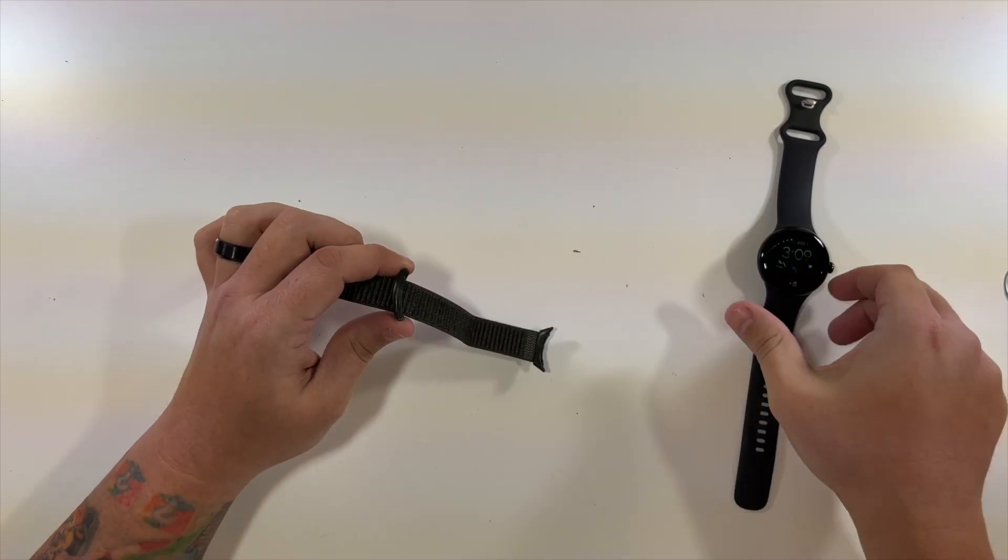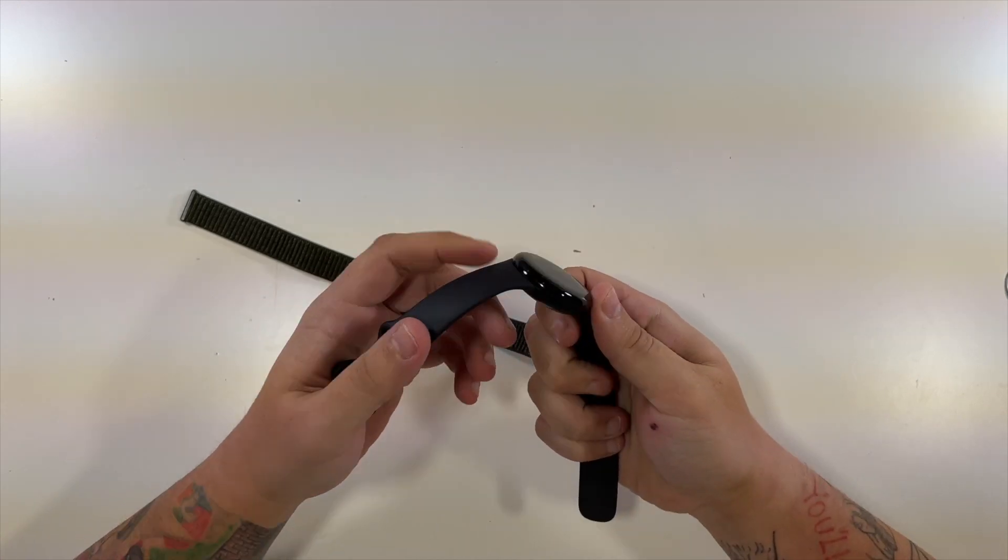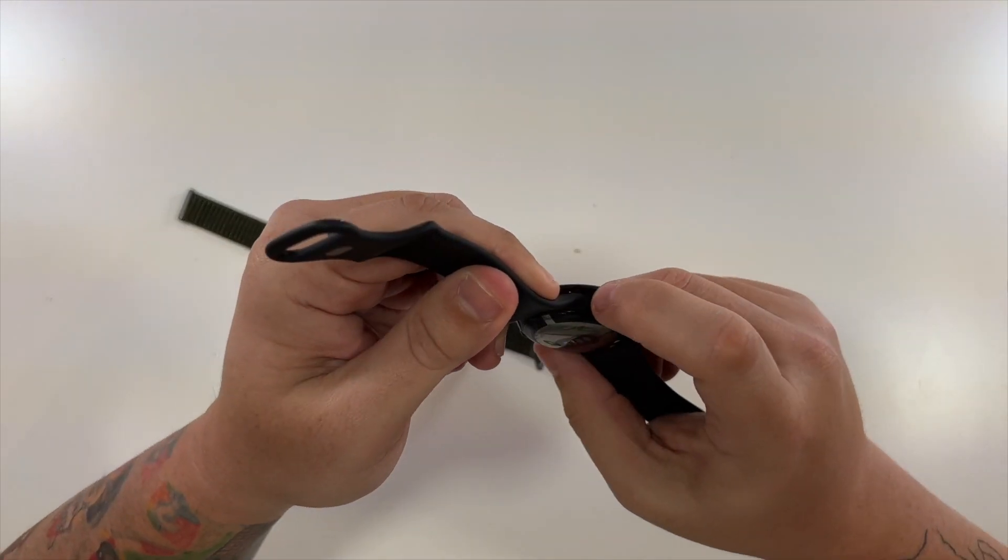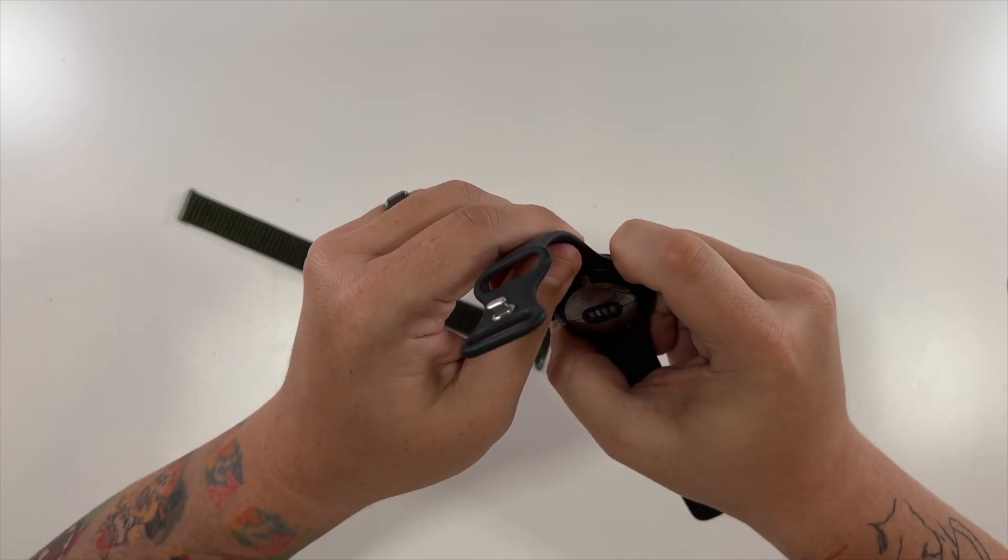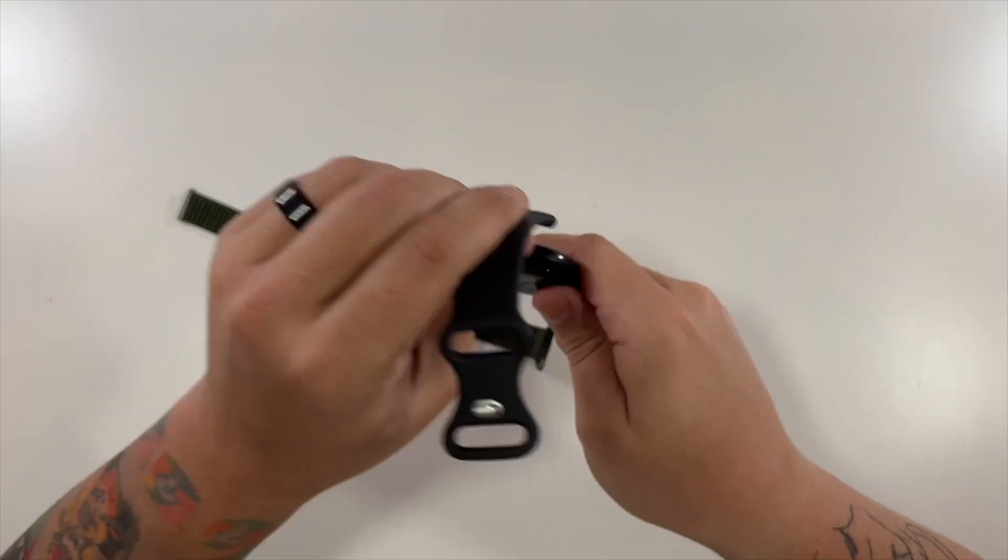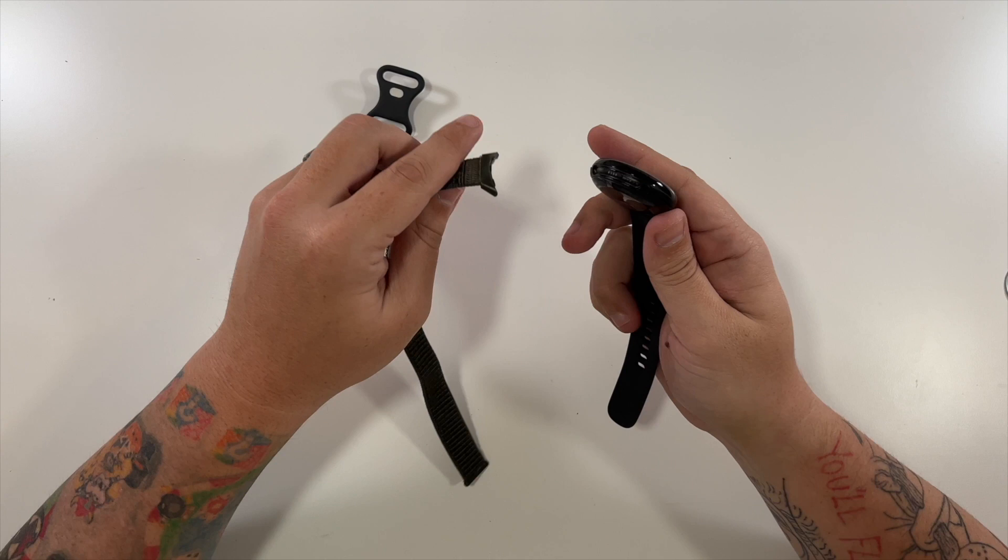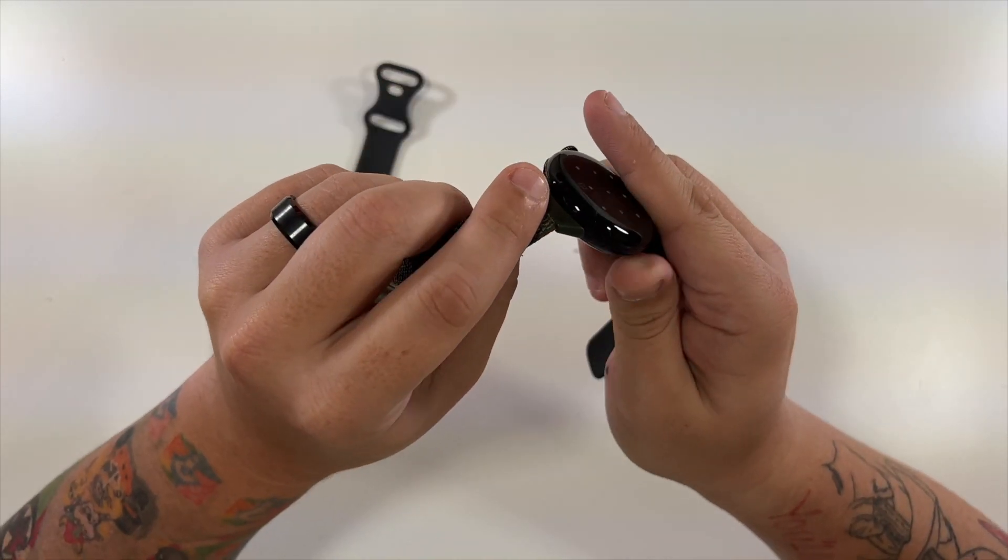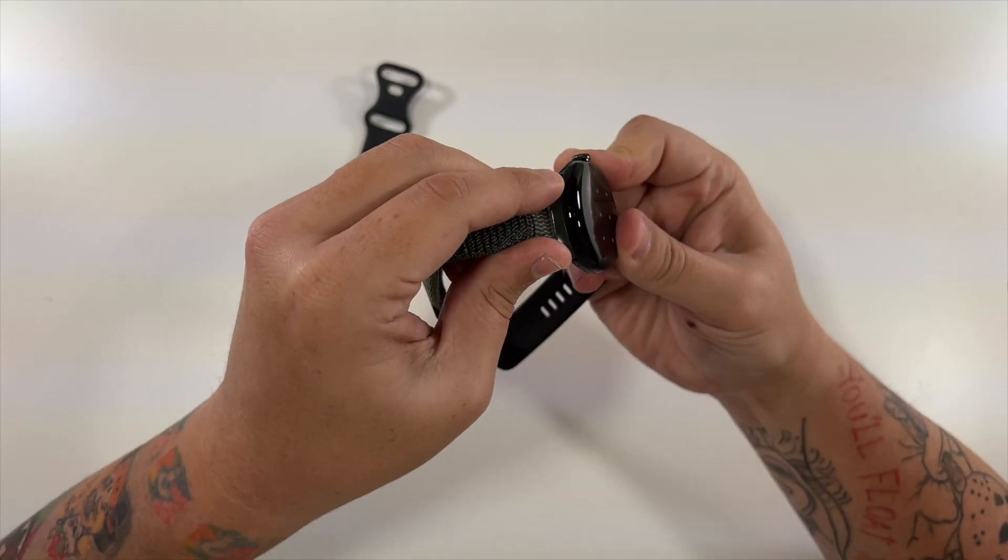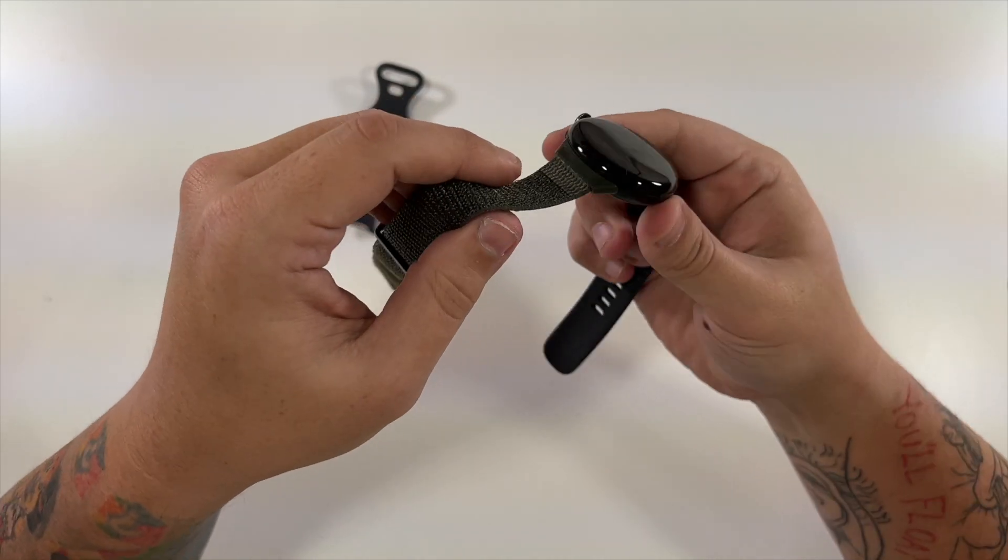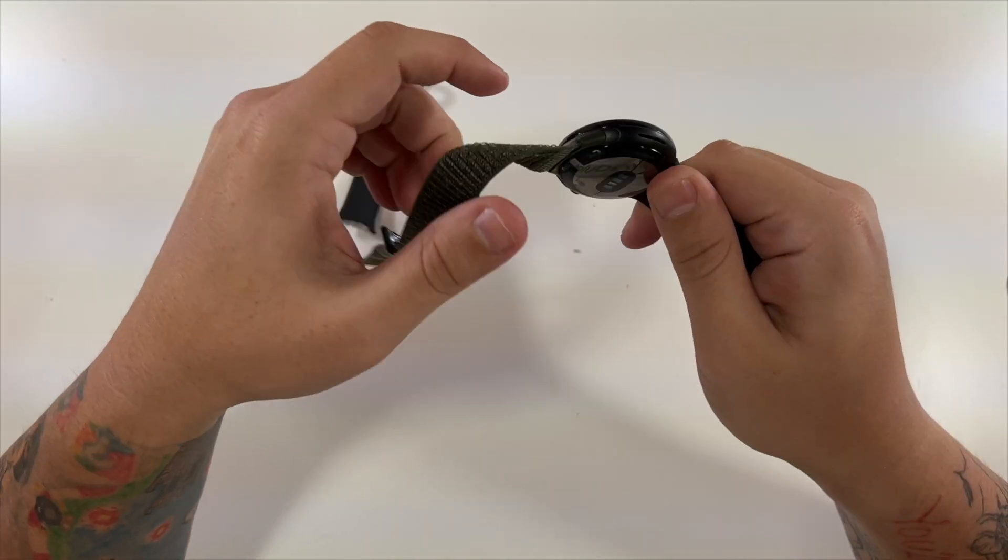Let's put this on my Pixel Watch here. So to get these out, you just have a little button that's basically right there. You're able to press it and then they kind of turn to the right and pop out. And so then to put this one in, it's kind of the same way. You start near the button and then you're able to rotate it to the left and it clicks into place. Hopefully that makes sense.